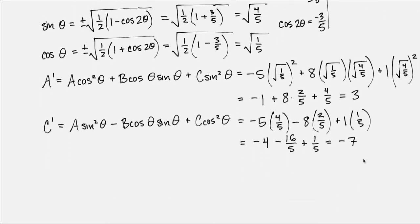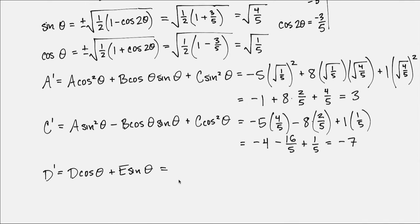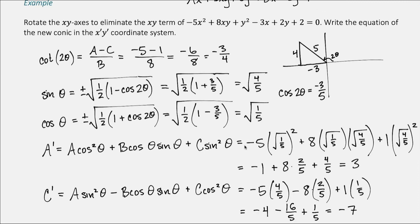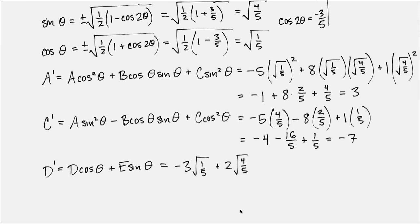For d', the conversion is d·cosθ + e·sinθ. Here d is −3 and e is 2, so we have −3·√(1/5) + 2·√(4/5) = −3/√5 + 4/√5 = 1/√5. So d' equals 1 over the square root of 5.